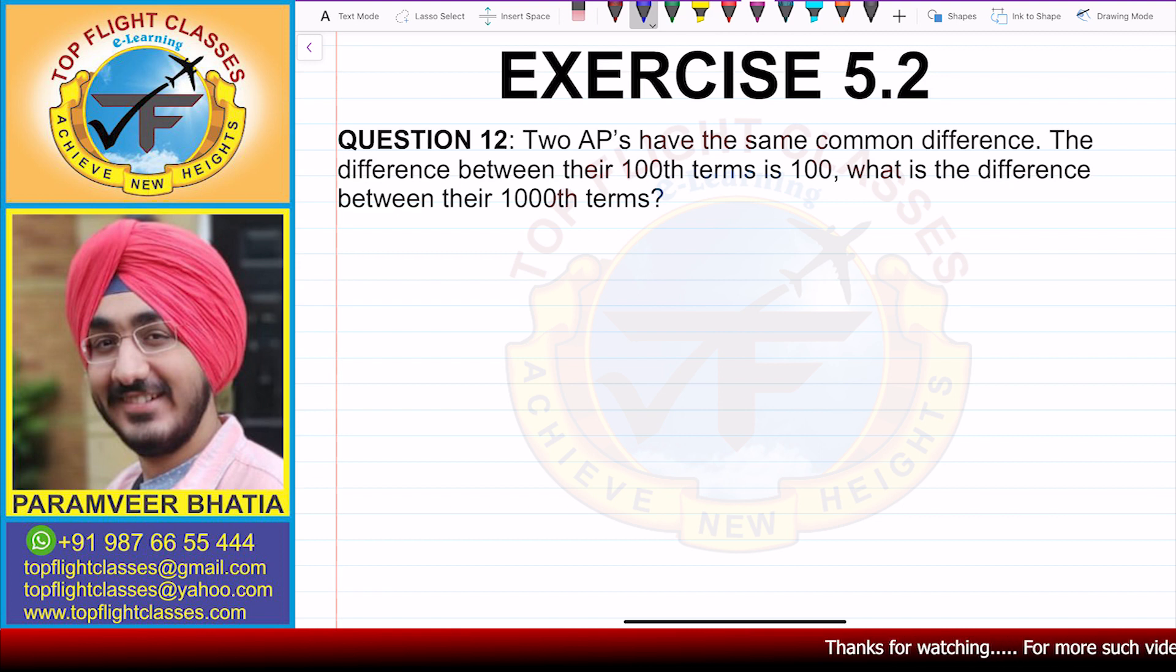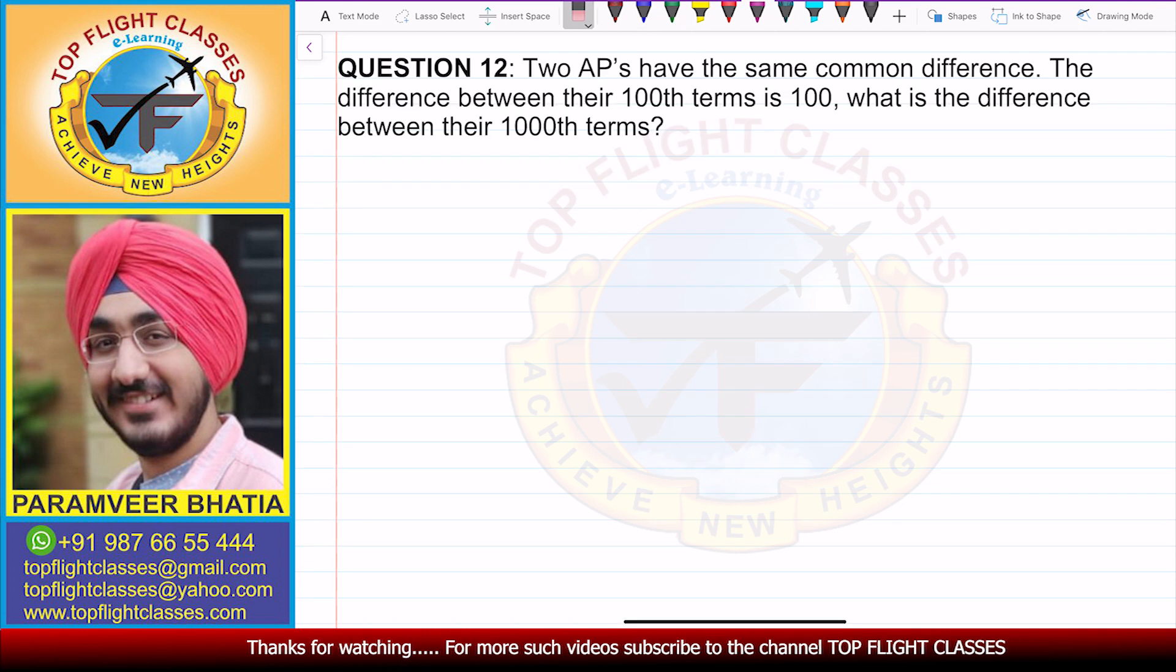Now question number 12 says two APs have the same common difference. The difference between their 100th terms is 100. What is the difference between their 1000th terms? Now to solve this question,